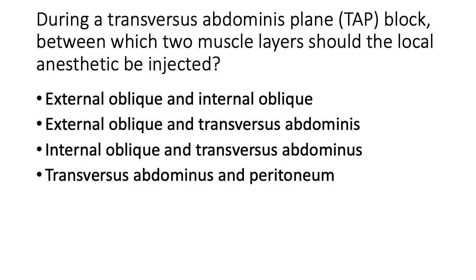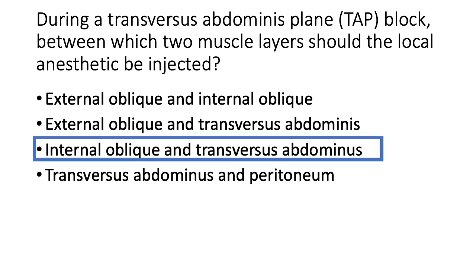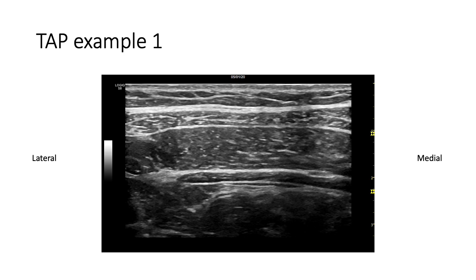Quiz question: during a transversus abdominus plane block, between which two muscle layers should the local anesthetic be injected? The answer is between the internal oblique and transversus abdominus muscles. Here is an example of a TAP plane from a real patient, showing the muscle layers. The yellow arrow corresponds to the projected needle path — remember, the local needs to be deposited between the internal oblique and the transversus abdominus muscles.